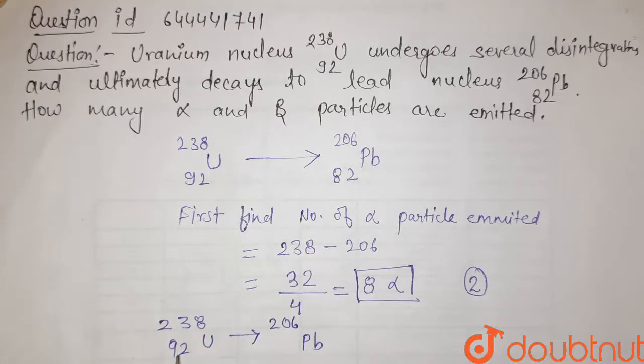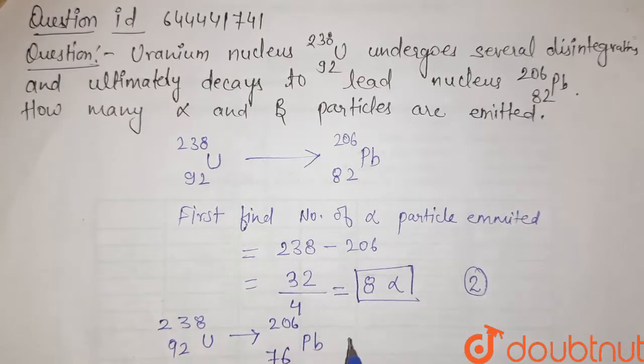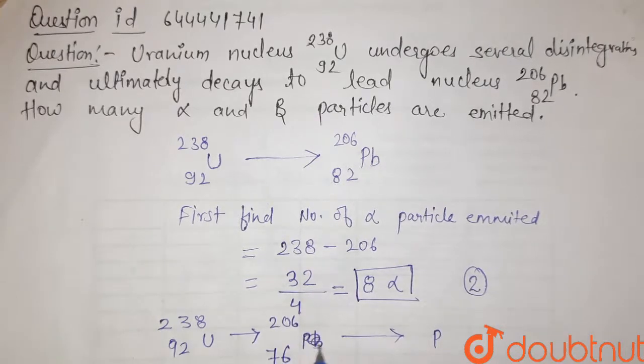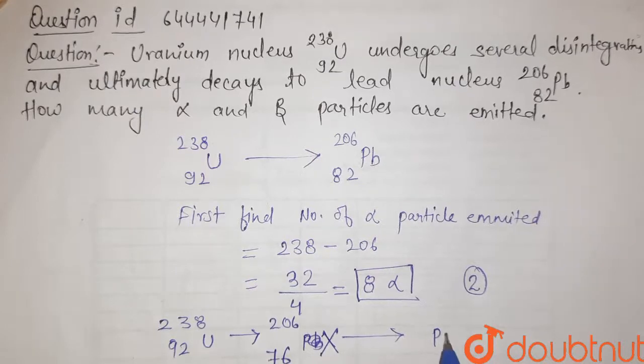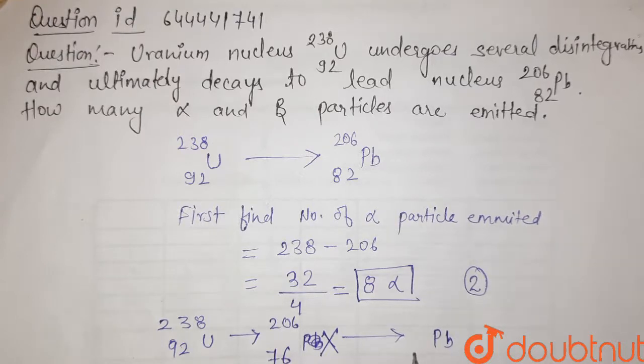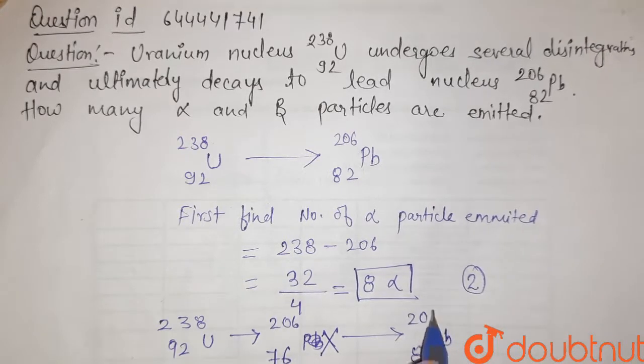Atomic number decreases by 16 units, so it finally gives 76. Now in beta emission, let me write it as X because it is an intermediate. So in beta emission, atomic number increases, so it becomes finally 82 and 206.